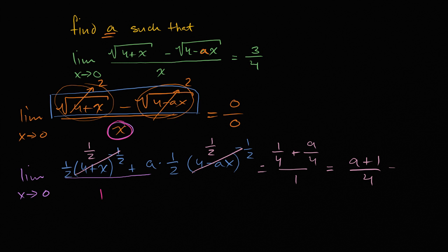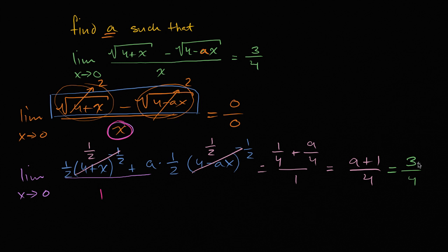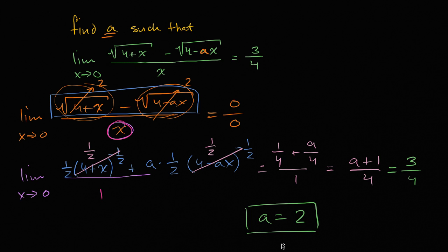We need this to equal three-fourths, which was our original condition. So a plus one over four equals three-fourths, meaning a plus one equals three, and therefore a equals two. And we are done.